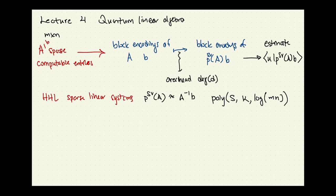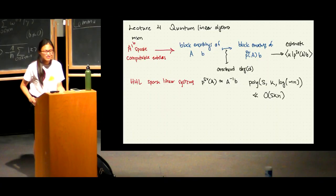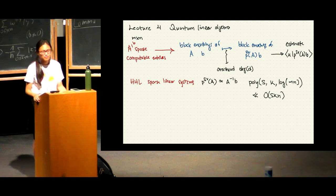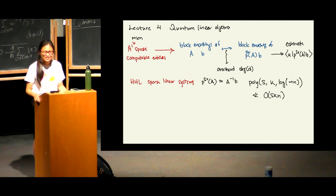The concept of block encoding did not exist when HHL published the algorithm. This is the right framework to understand it, in the same way that amplitude amplification is the right framework for Grover's algorithm. So I'm being ahistorical in my retelling of this.